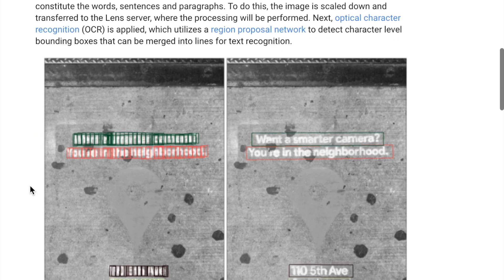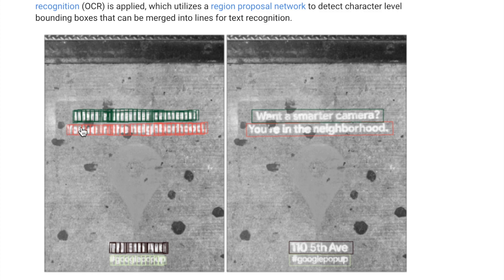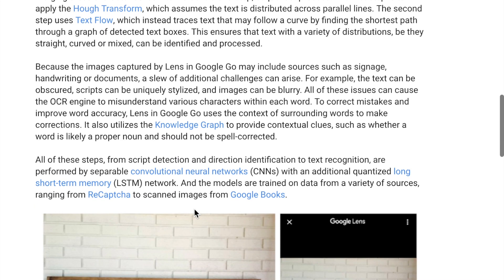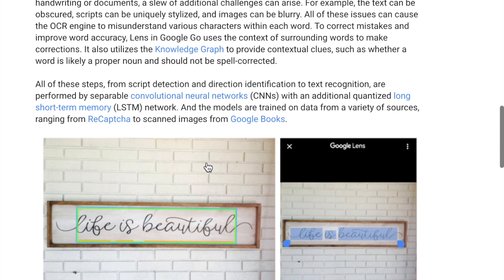For text recognition, they use an RCNN bounding box detector and optical character recognition, one of the oldest algorithms for this task. They then use a text flow algorithm, essentially a shortest path algorithm from graph algorithms, to connect characters and construct sentences, followed by knowledge graphs to correct any mistakes made in the process.